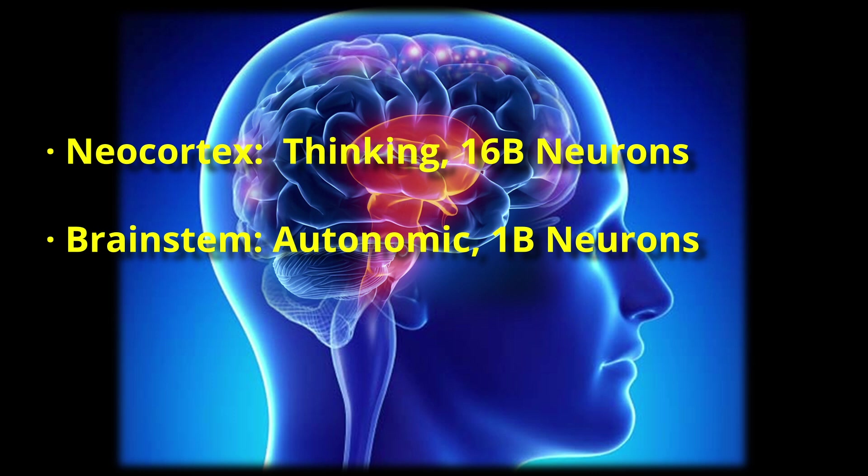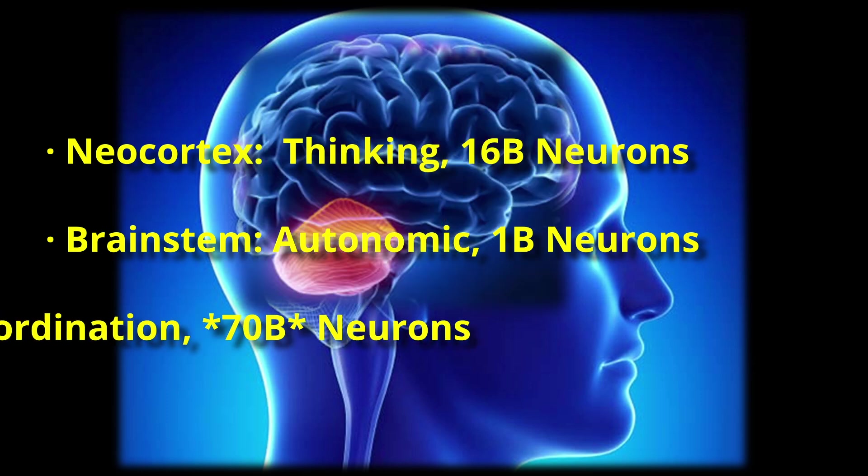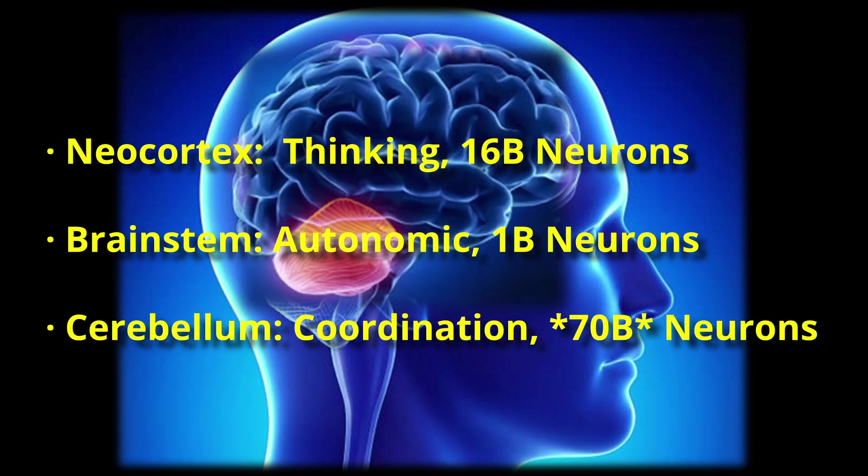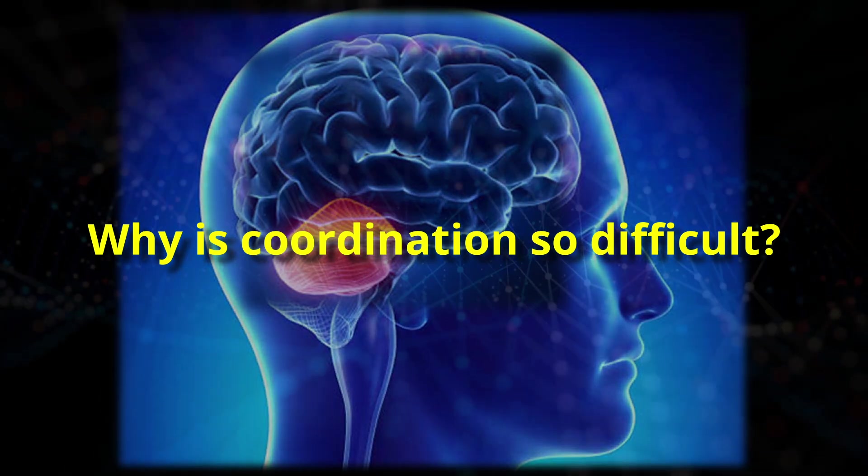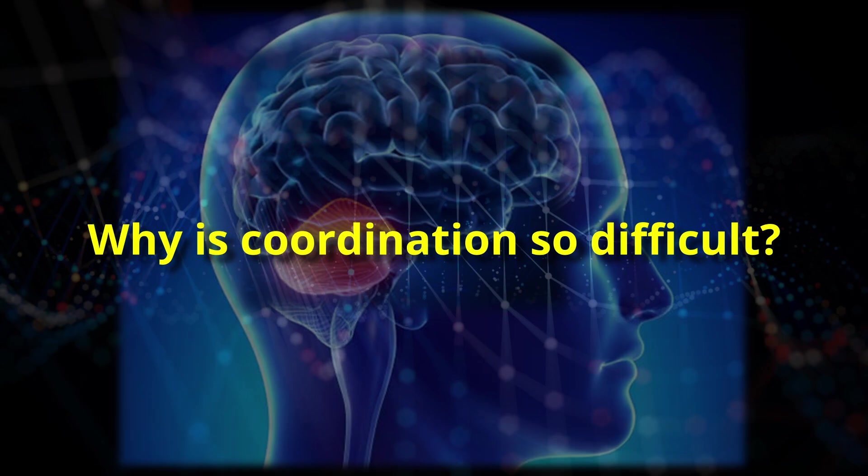The brain stem handles autonomic functions like breathing and heartbeat and it contains about a billion neurons, a mere one percent. The cerebellum is the powerhouse of coordination containing a staggering 70 billion neurons or 80 percent of your brain's neurons in only about 10 percent of its volume. Now here's the question: why does coordination take so much brain power?